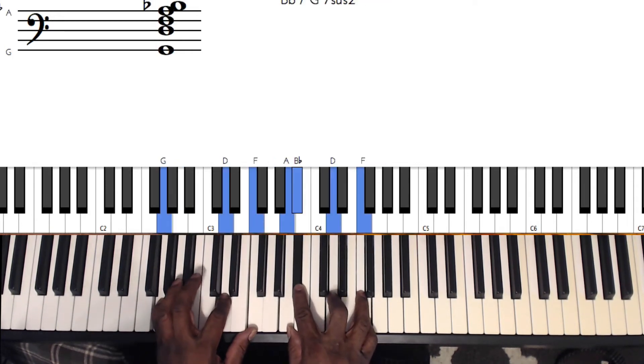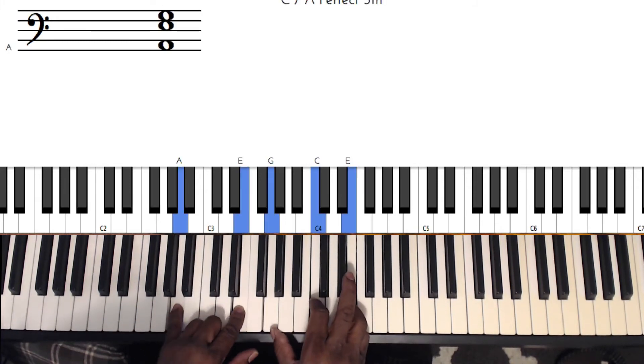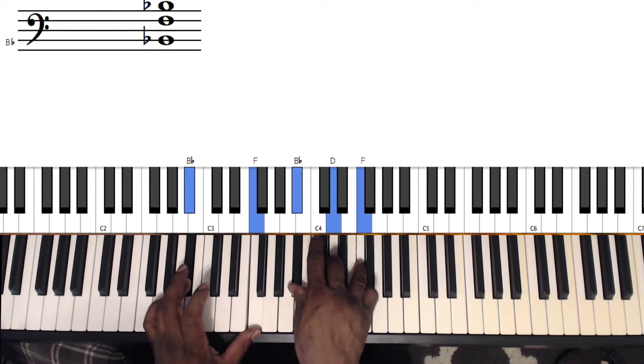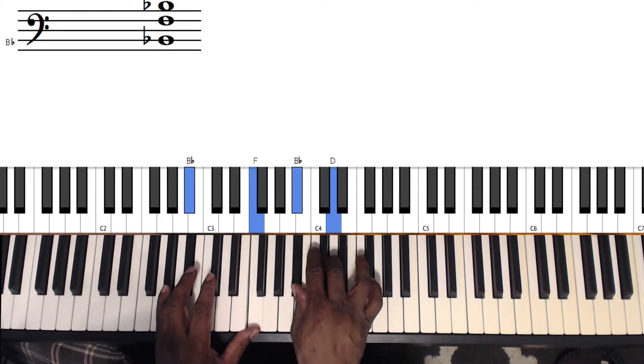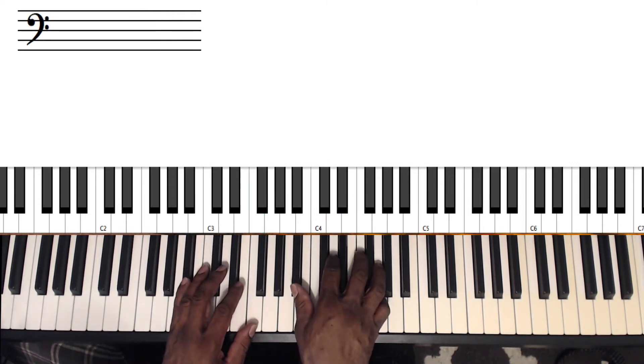This one's a G, D, F, A. Then Bb, D, and F. Back to this chord and then up, which will be Bb, F, Bb, D, and F. And then those lead-in chords back into the chorus again.